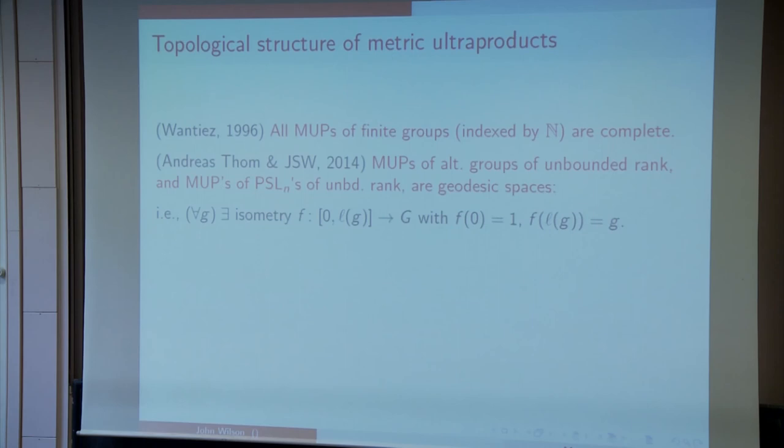Pause for breath and then a slight change of topic. We're now going to look at metric ultraproducts, topological structure of these metric ultraproducts. And, well, something has been known for a long time. This is the earliest reference I can find for this result. There may be earlier references. If anybody can help with an earlier reference, I'd be grateful. All metric ultraproducts of finite sets indexed by ℕ are complete.